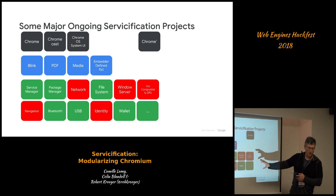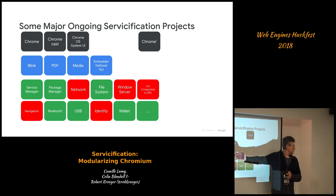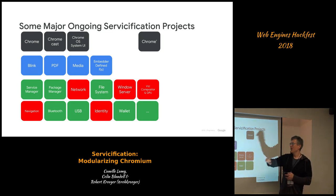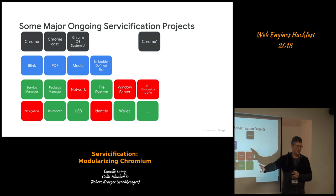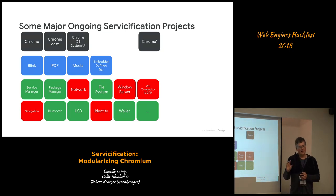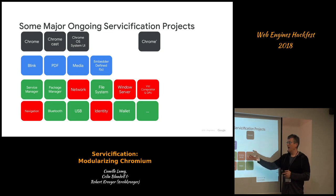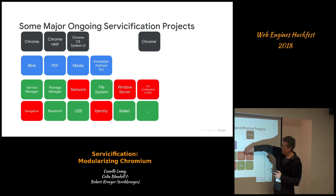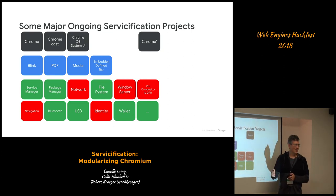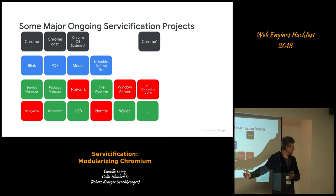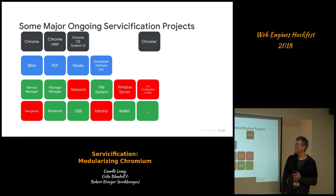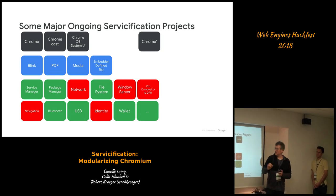The ones actually being worked on are highlighted. There's a network service — launched to beta on desktop. There's a navigation service. There's a compositor and GPU service called Viz, which is launching or launched depending on which piece you're talking about. There's a Windows Server portion — this bundle of things together used to be called Muse or the Mojo UI service. There's an identity service in progress. The red ones are major ones in progress at various stages. The service manager portion is like the master that kicks off all the other services, and it's in design because it's sort of blocked on all the other bits.